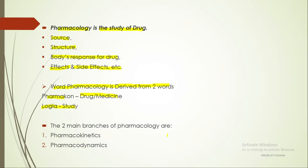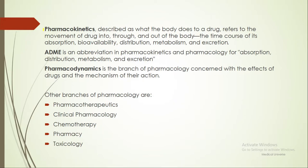There are two main branches of pharmacology: pharmacokinetics and pharmacodynamics. Pharmacokinetics is described as what the body does to a drug, and it refers to the movement of a drug into our body. It includes absorption, bioavailability, distribution, metabolism, and excretion.